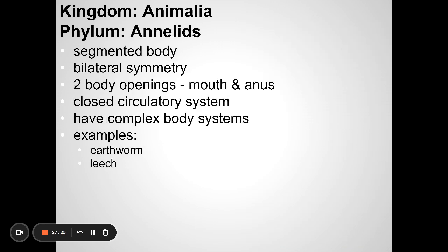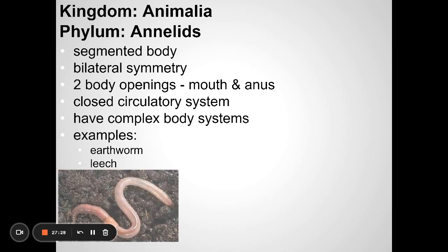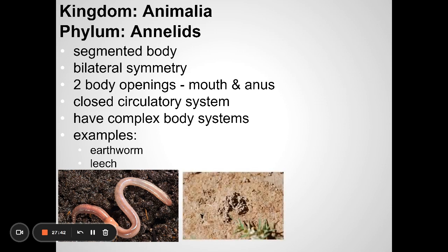Segmented worms — Annelida — include earthworms. They're super helpful for ecosystems: they digest material in the soil, and their waste fertilizes it. Those little piles you might see on the ground that look like mud? That's actually earthworm excrement — feces of earthworms — and those are helpful to the soil.